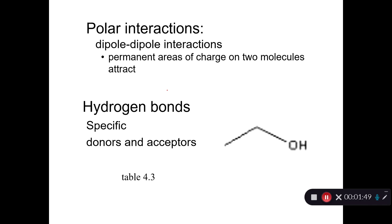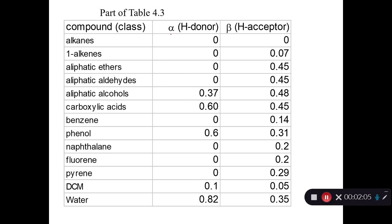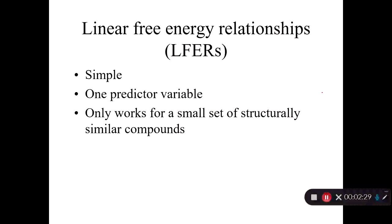Then we have the polarity interactions. We haven't really talked yet about what kind of parameters we would use to describe the polarity of an organic chemical — we'll talk about that more in this lecture. That's definitely the hard part, the polarity part. Hydrogen bonding is specific: you have hydrogen bond donors and acceptors. We've already seen the table of alpha and beta values, and we know we could use these values to do some predictions of things like aqueous solubility.